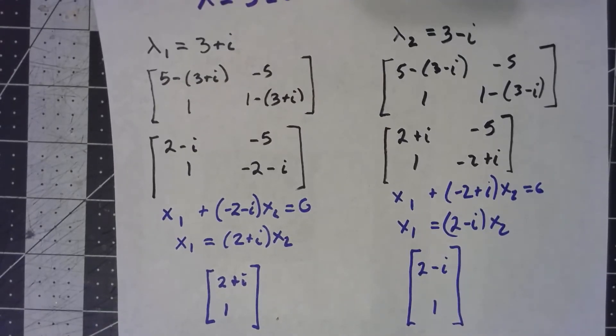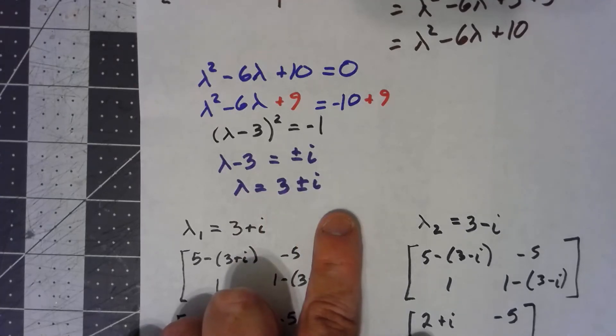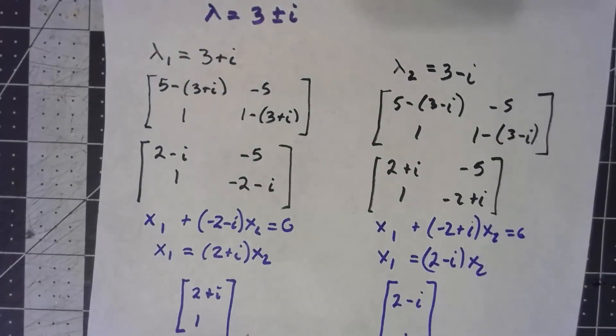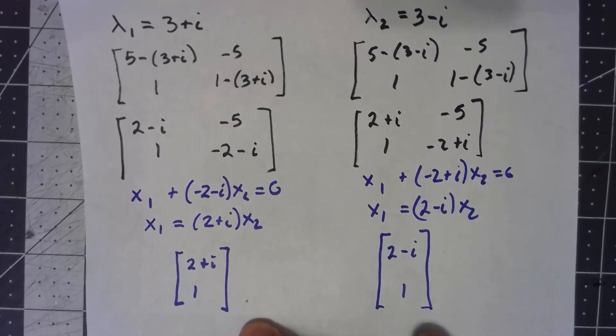Anytime you've got a complex eigenvalue, the complex conjugate is also an eigenvalue. Anytime you figure out what the associated eigenvector is, the complex conjugate eigenvalue has the complex conjugate eigenvector.